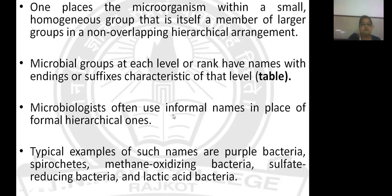Microbiologists generally use informal names in place of the formal hierarchical name for describing microorganisms, because it is much easier to understand their physiology and properties with a general name. Typical examples of such informal names are purple bacteria, phototrophic methane-oxidizing bacteria, sulfate-reducing bacteria, and lactic acid bacteria. These names highlight the key features of the microorganisms in a particular group.